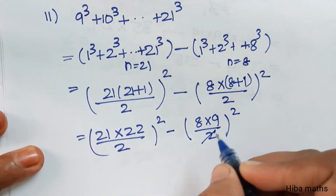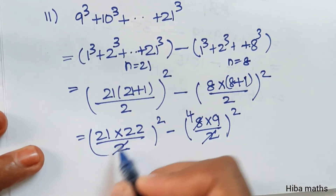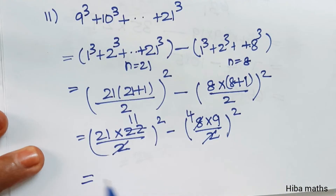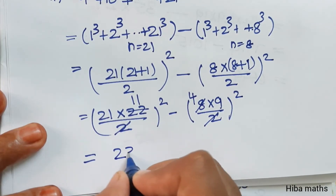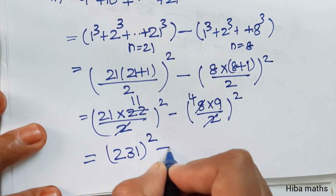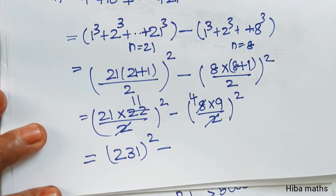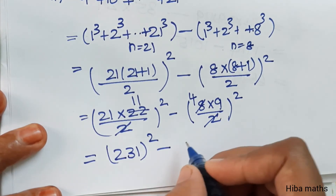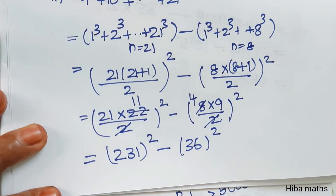From the table, the 2 fours are canceling. For 21: 21 into 11 gives 231, that is squared. Minus 9 into 4 which is 36, that is squared. So we have 231 squared minus 36 squared.